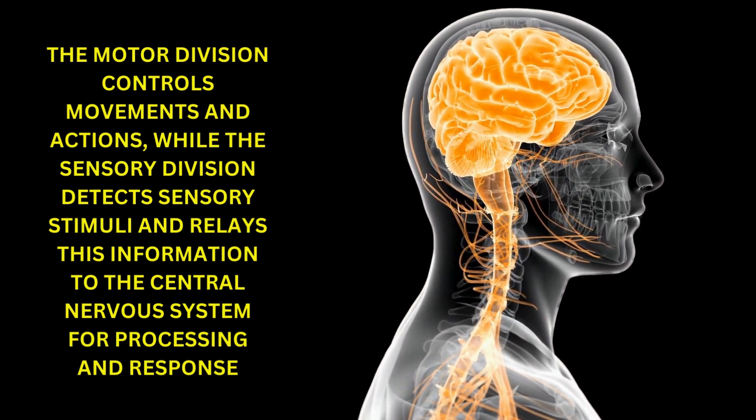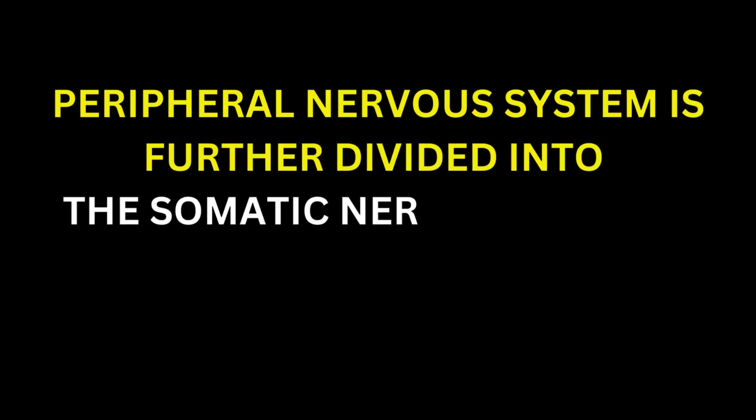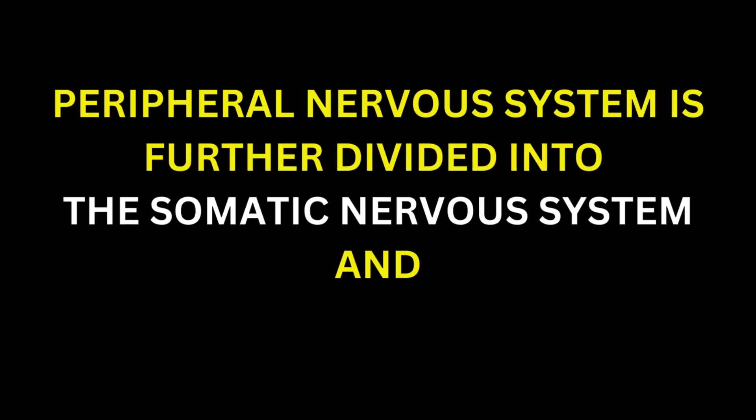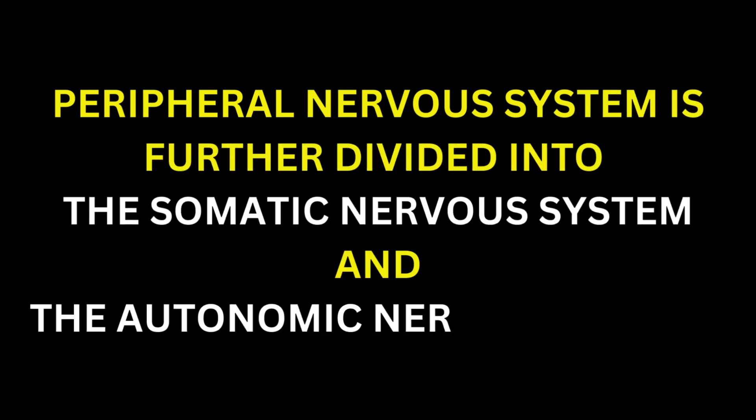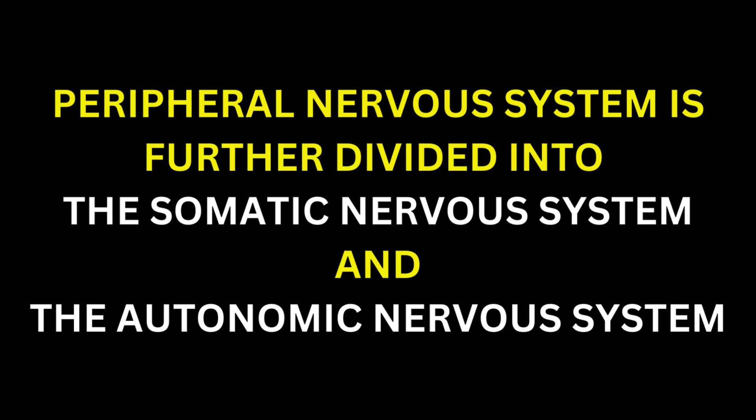The Peripheral Nervous System (PNS) is further divided into the somatic nervous system and the autonomic nervous system.